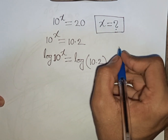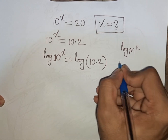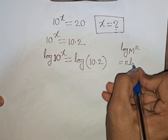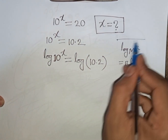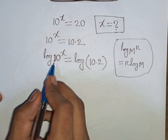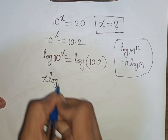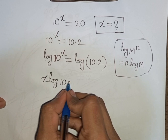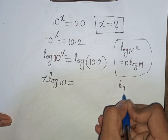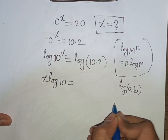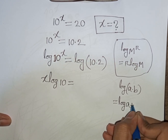Now we can apply this rule: log m power r is equal to r log m. That means this power r will move to the base. So according to this rule, this power x will move to the base, and we can write x log 10 is equal to log of 10 times 2. Then we apply the formula log of a times b is equal to log a plus log b.